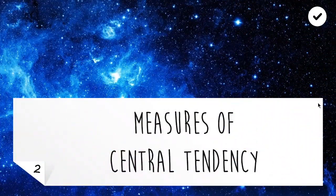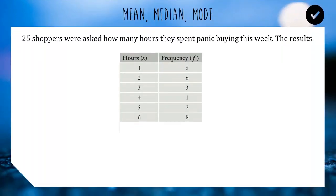For today's lesson, we are looking at measures of central tendency, which is really just a smug way of saying mean, median and mode. We have 25 shoppers who are asked how many hours they spent panic buying in the last week. The results have been tabulated below.